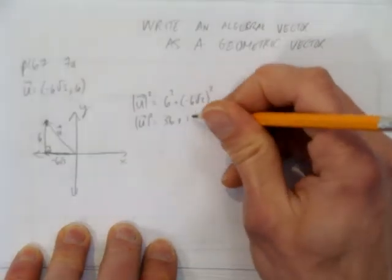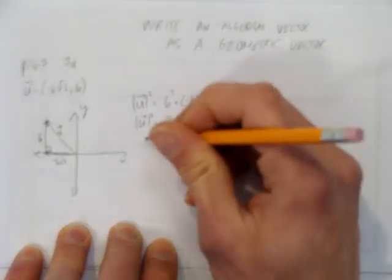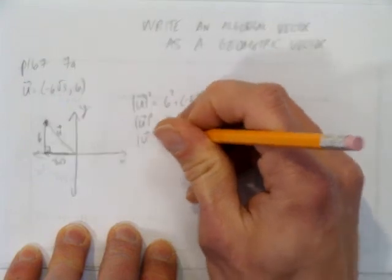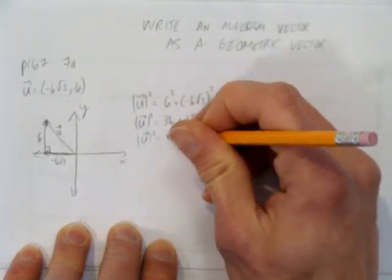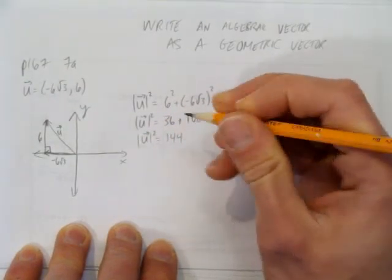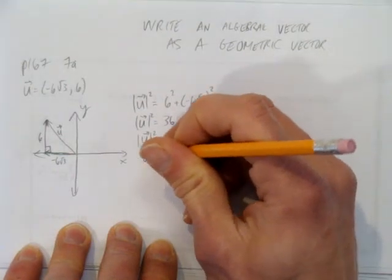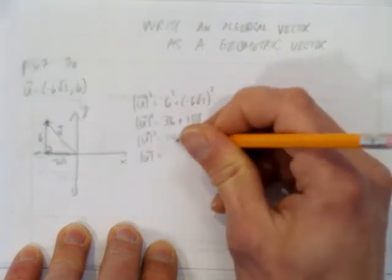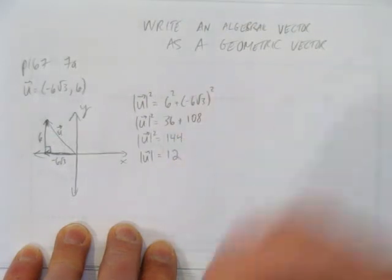So you get 36 plus 108. Maybe that one you can do in your head. The magnitude of u squared is 36 plus 108 is 144. And to get the magnitude of u by itself, just square root. Square root of 144 is 12.